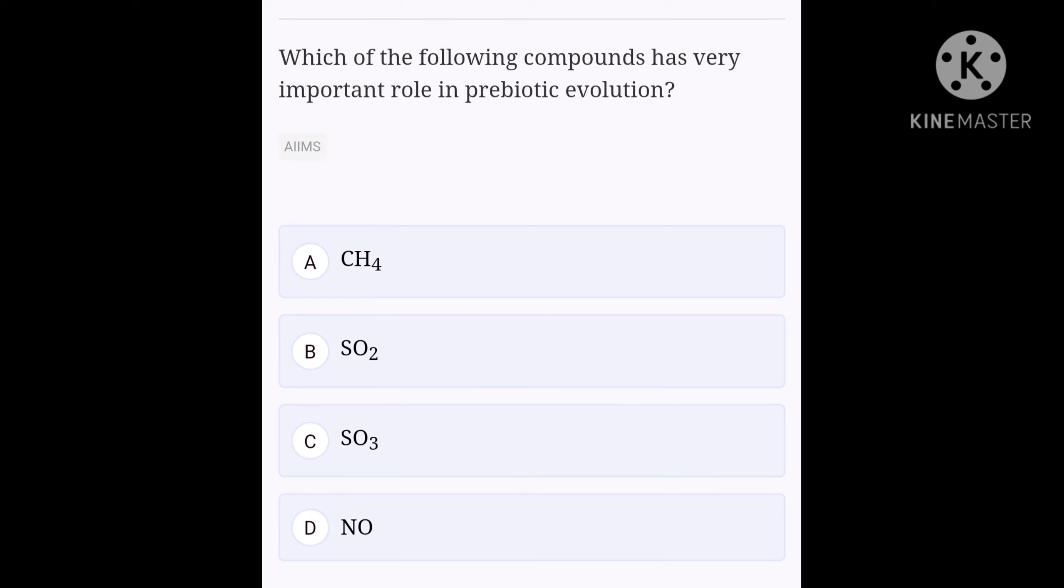Next question. Which of the following compounds has a very important role in prebiotic evolution? Option A: methane, option B: sulfur dioxide, option C: sulfur trioxide, option D: nitrogen monoxide. Okay, since this is a very important and my favorite topic in this chapter, I would like to explain more about it.